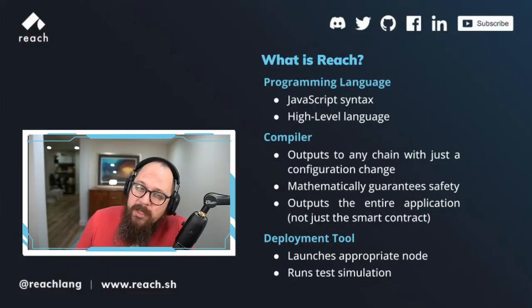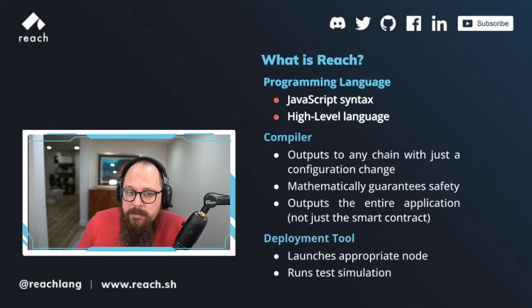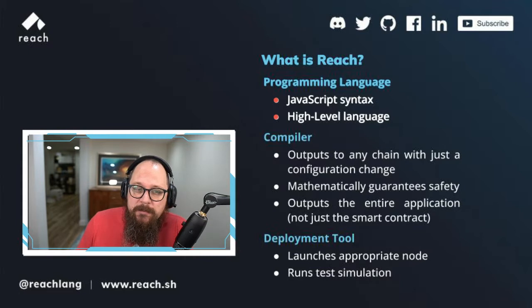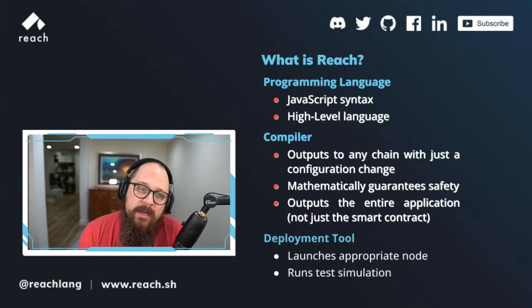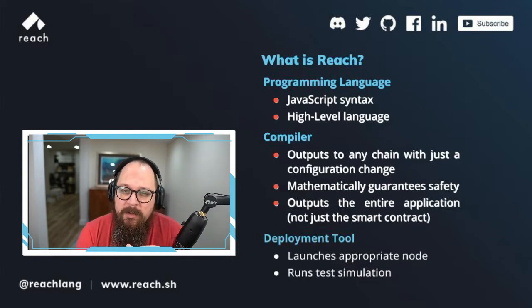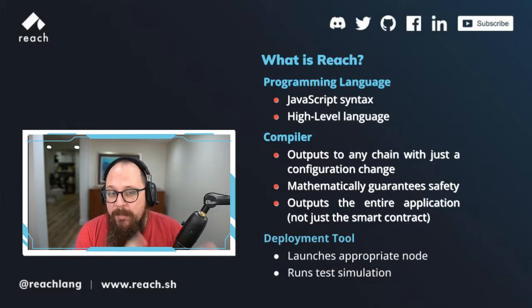A programming language, compiler, and deployment tool, Reach changes the way the world builds blockchain applications. The Reach language is syntactically similar to JavaScript, which lets you move fast and focus on high-level business logic. Not ready to wait six months and spend tens, if not hundreds of thousands of dollars in auditing? Our built-in verification engine guarantees the safety and correctness of the smart contracts and the middleware as you compile.